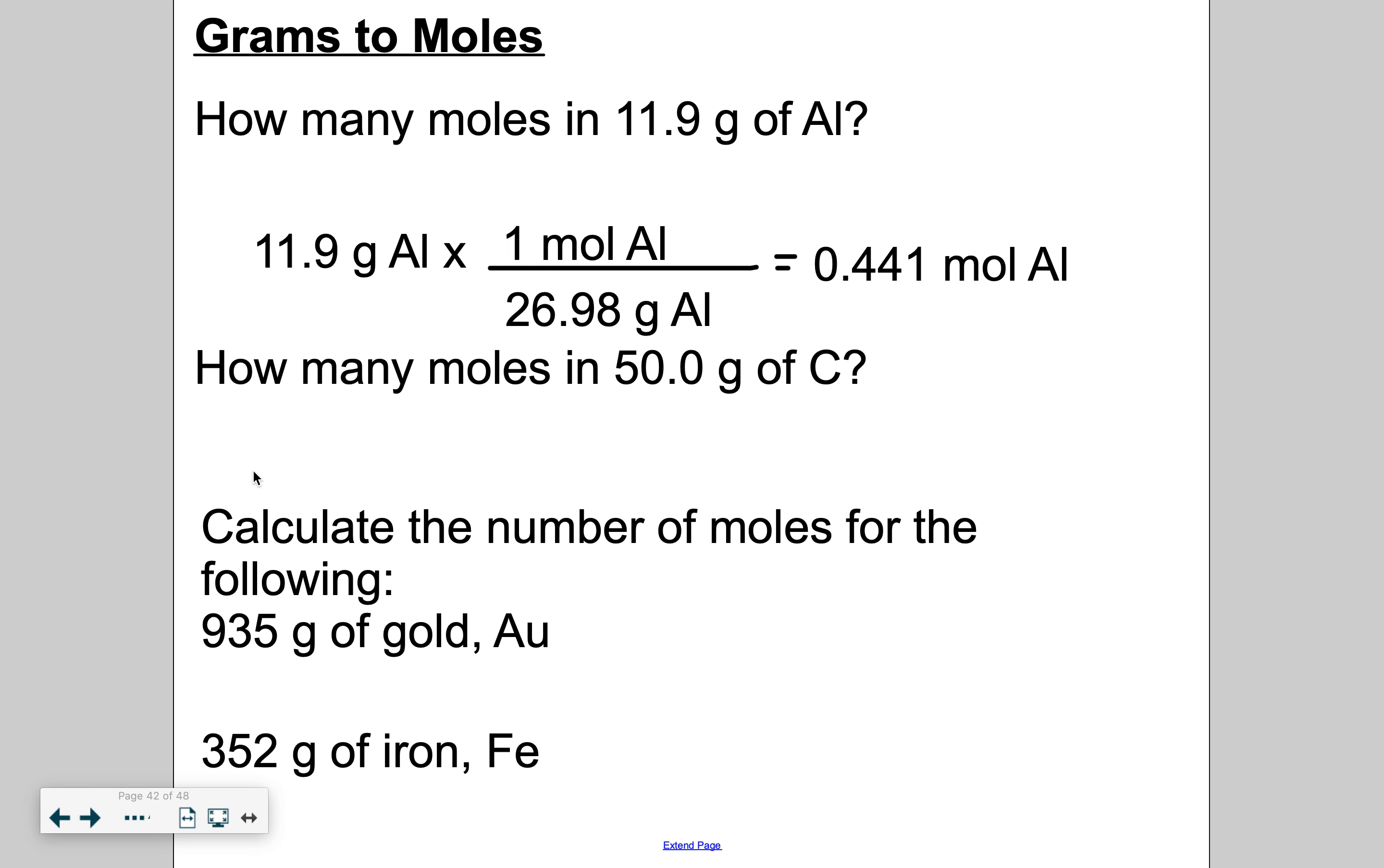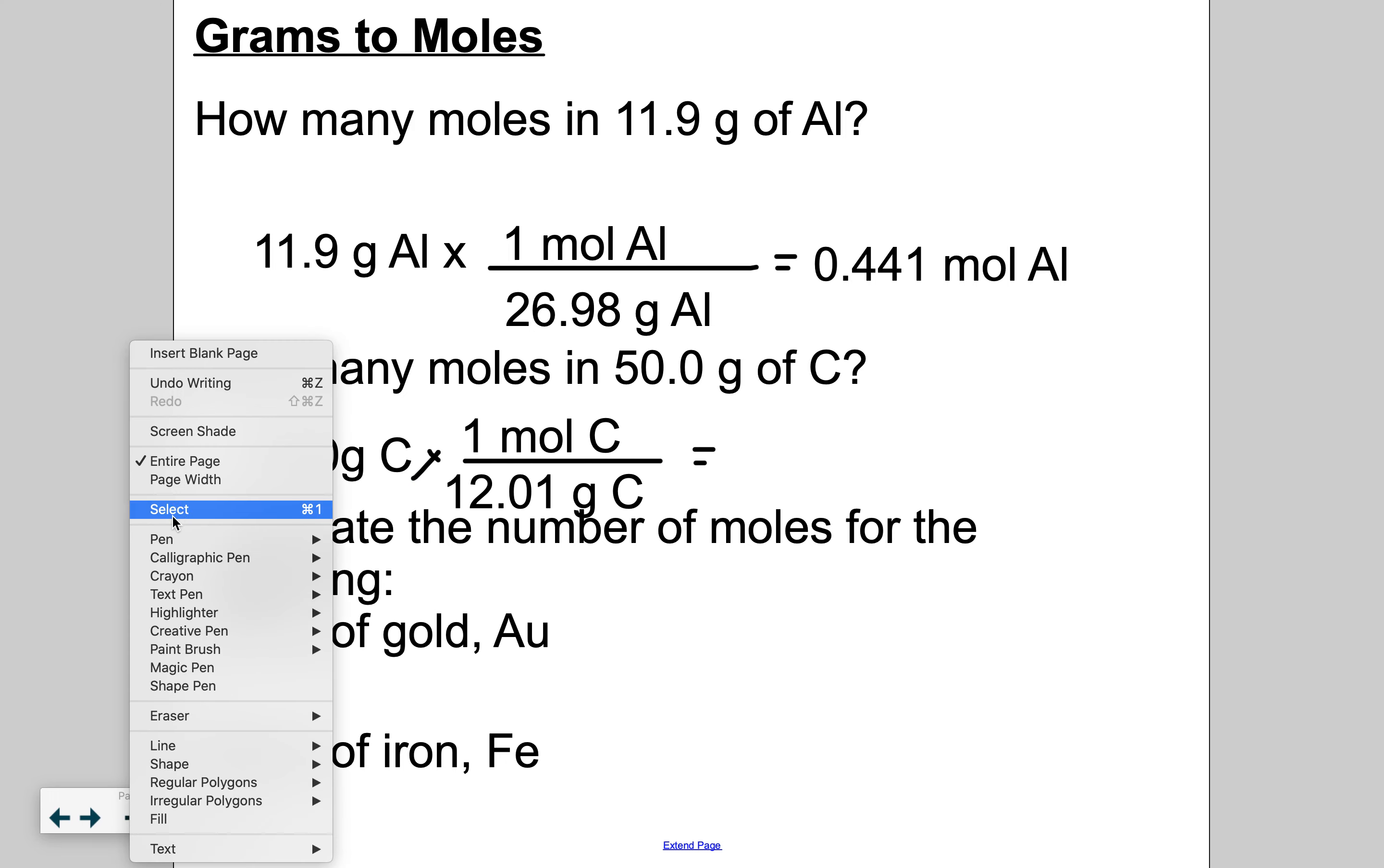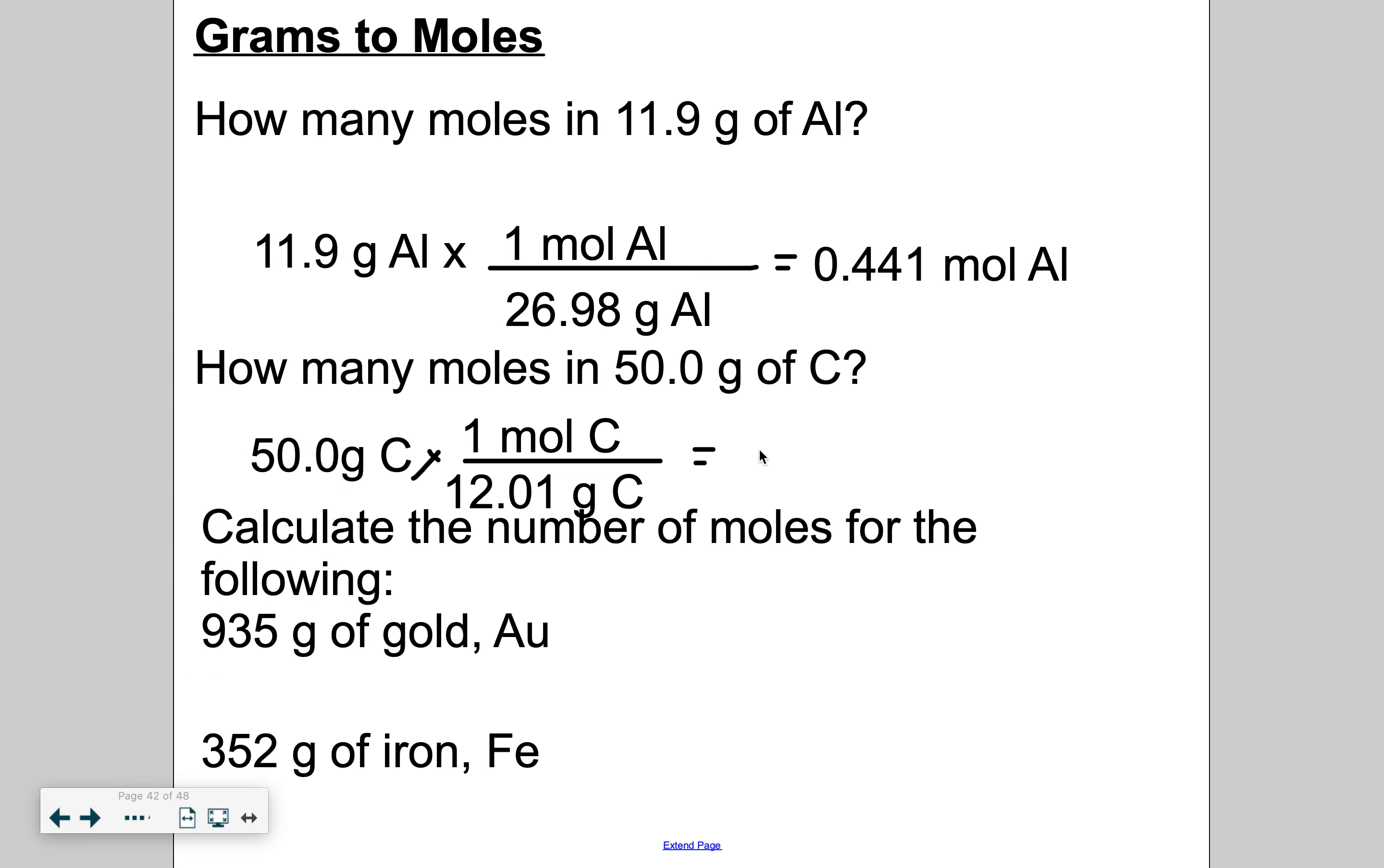How many moles in 50 grams of carbon? So I'll start with what I'm given. 50 grams of carbon. I'm going to set up my conversion factor. The molar mass of carbon, according to the periodic table, is 12.01 grams. And that is equivalent to a mole of carbon. So 50 divided by 12.01, 4.1631. Sig figs, we're going to go to 3. So 4.16 moles of carbon.